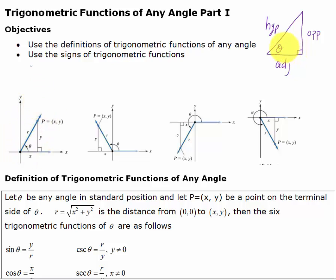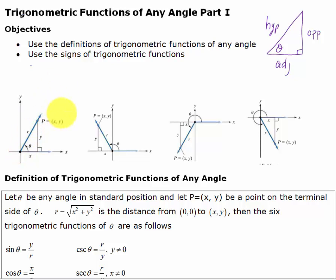Up until now, we've defined the six trigonometric functions for an acute angle, but we want to look at angles that are in the second quadrant, third quadrant, and the fourth. We start off by drawing an angle in standard position, and we have an ordered pair on that terminal side of theta.